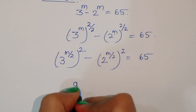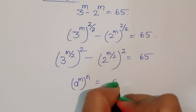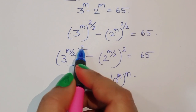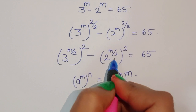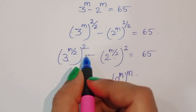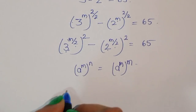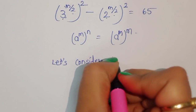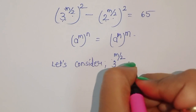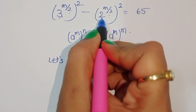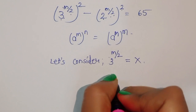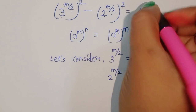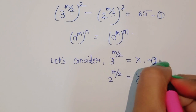We are using here the formula: a power m power n is equal to a power n power m. So we can write 3 power (m by 2) squared, and 2 power (m by 2) squared, is equal to 65. Now we consider: 3 power (m by 2) is equal to x — this is equation 1 — and 2 power (m by 2) is equal to y — this is equation 2. And the main equation is equation 3.